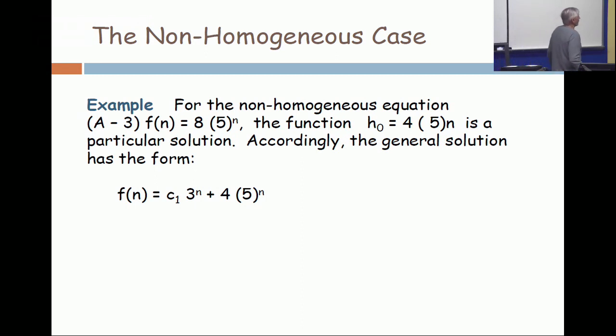And now I just pull it out of thin air. I say the function h₀ = 4(5)^n—not 4 times 5n, but 4 times 5 to the n. Put that n up in the air, it's an exponent. The function 4(5)^n is a particular solution. That's not obvious.